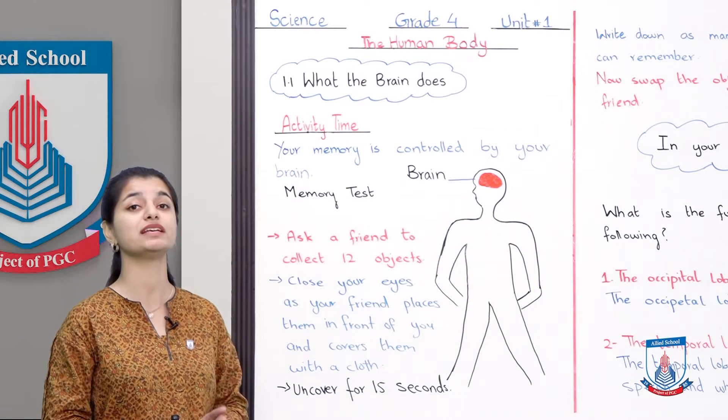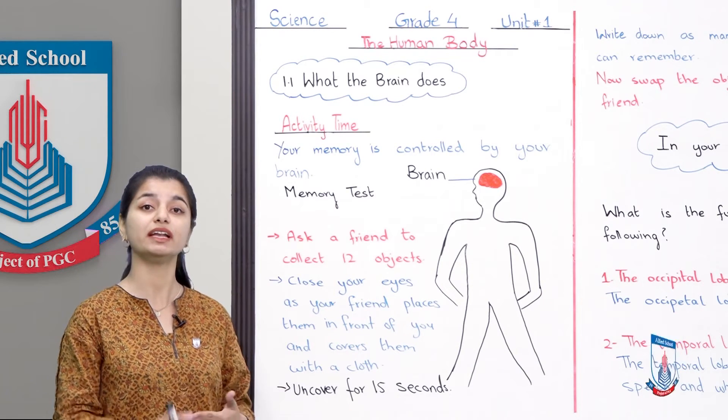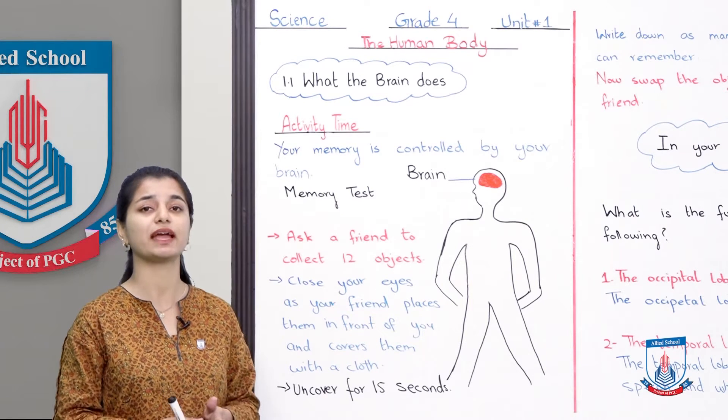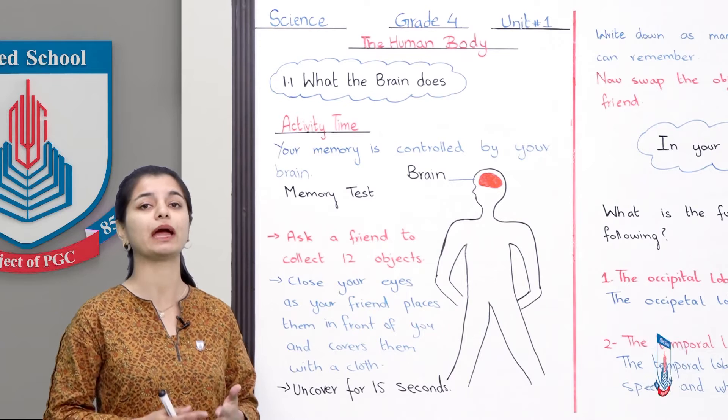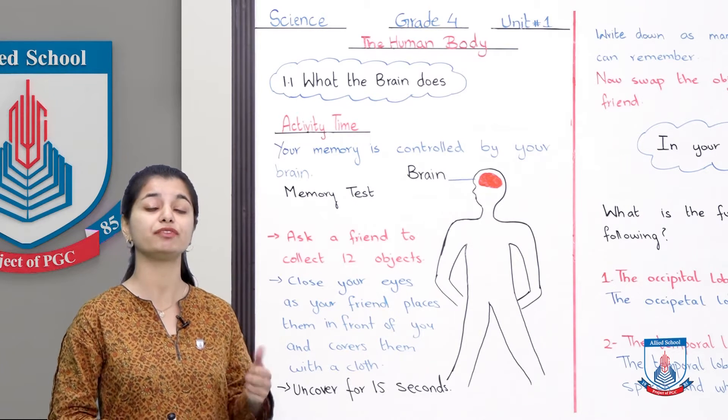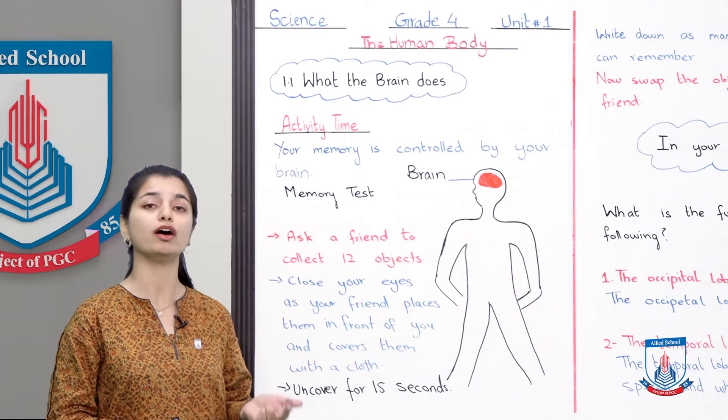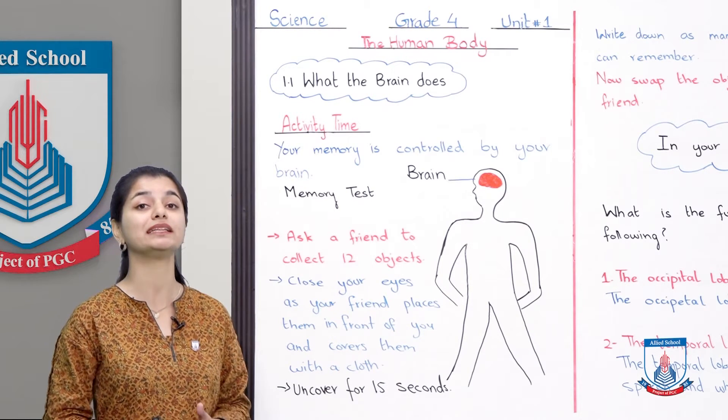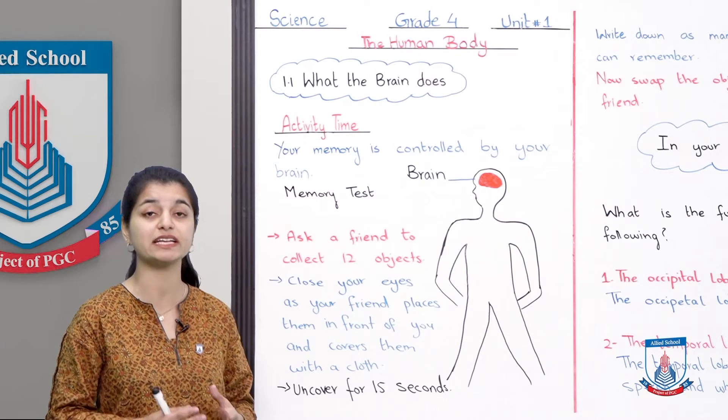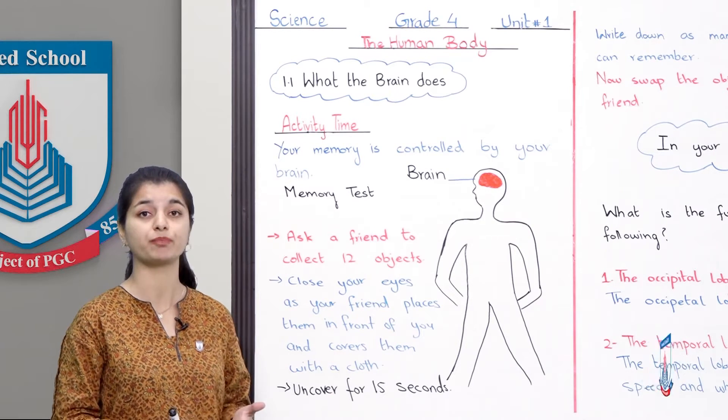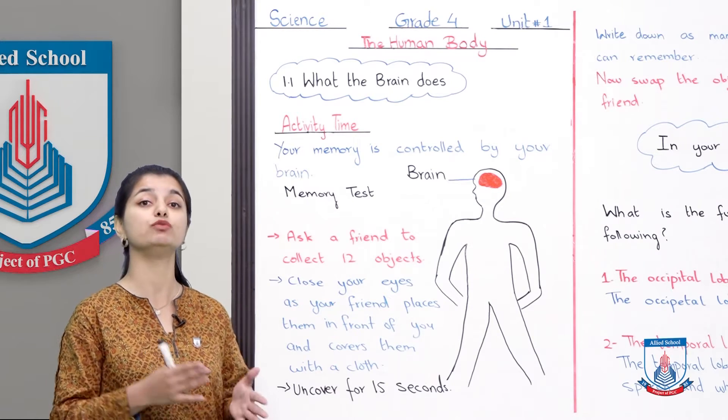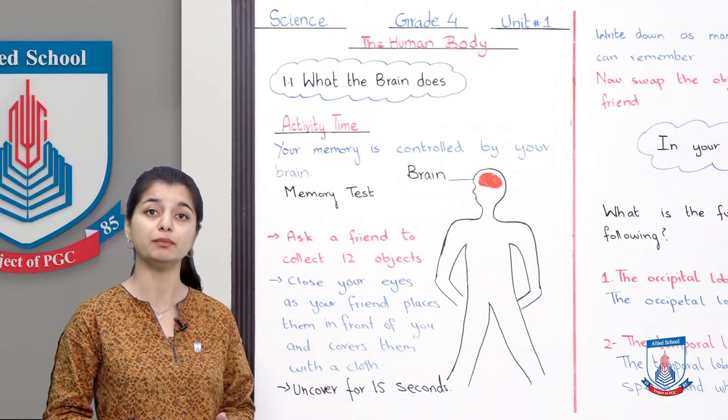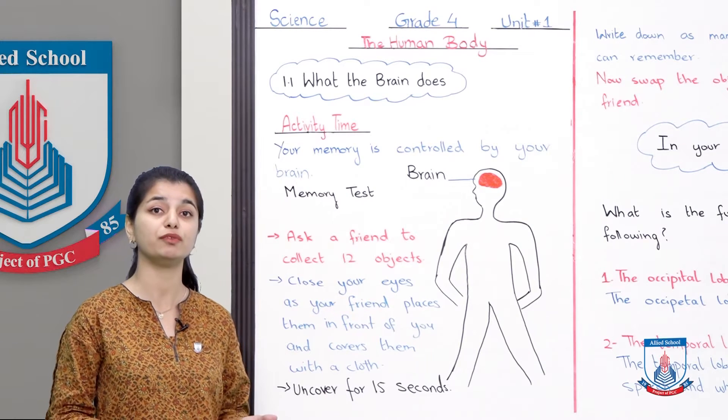One is the cerebrum and the other is the cerebellum. The cerebrum has four more parts: frontal lobe, parietal lobe, occipital lobe and temporal lobe. We discussed all four parts and what functions they're responsible for in our body. Then we discussed the brain's second main part, the smaller part called cerebellum, which is responsible for movement and balance.